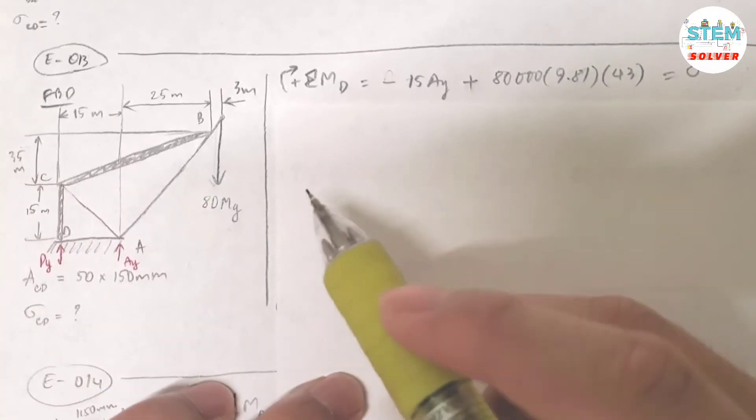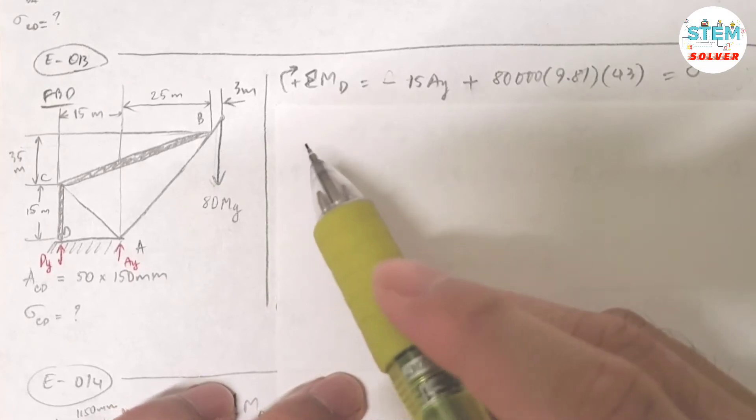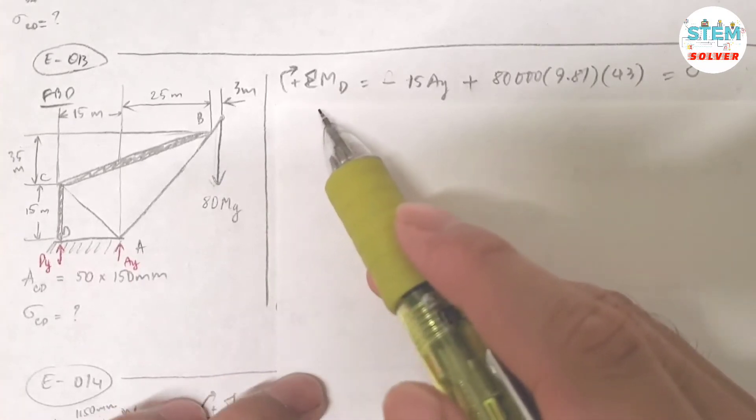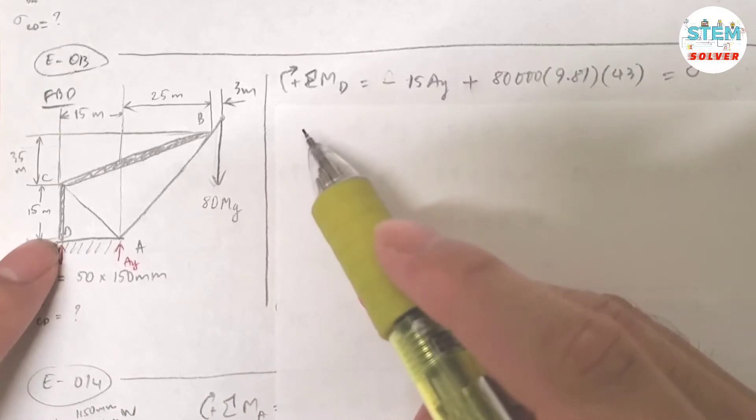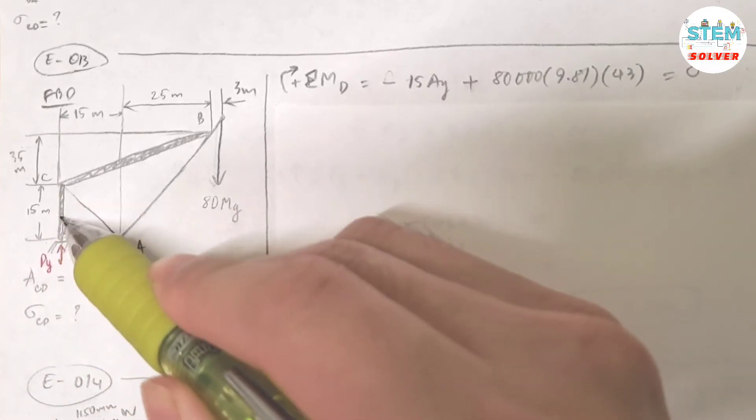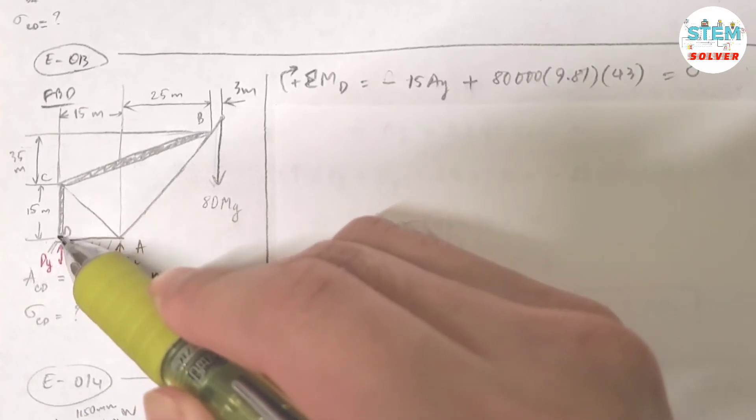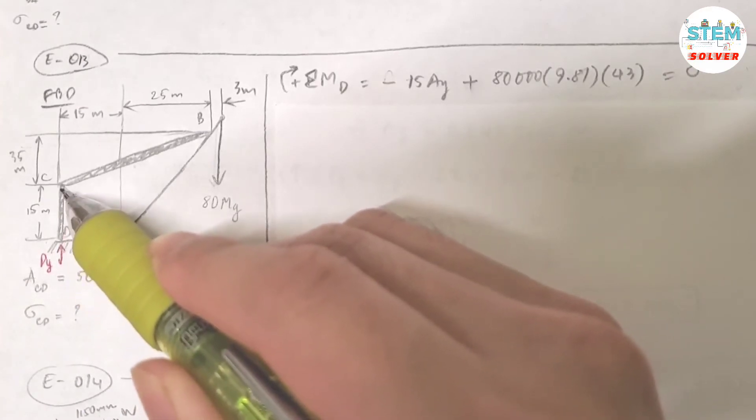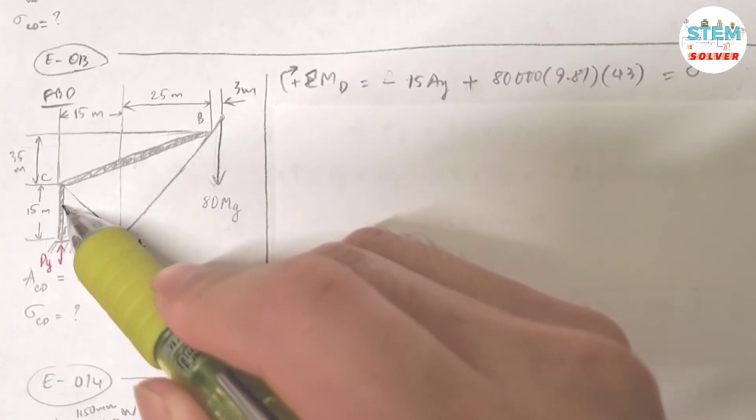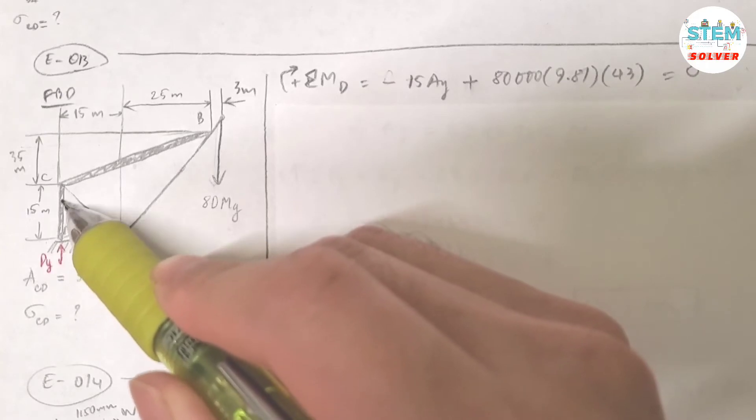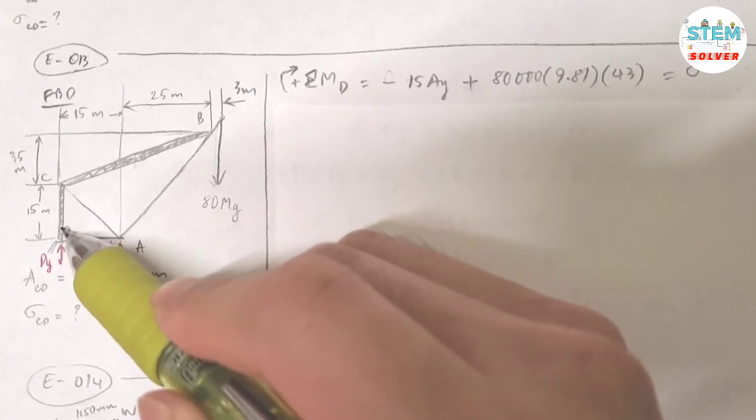First, what I did was I find the moment about D, about this point. So in order to find the normal stress in the link CD, you need to know the internal force in this link and the area. You are given the area. The unknown is just the normal force in this link.